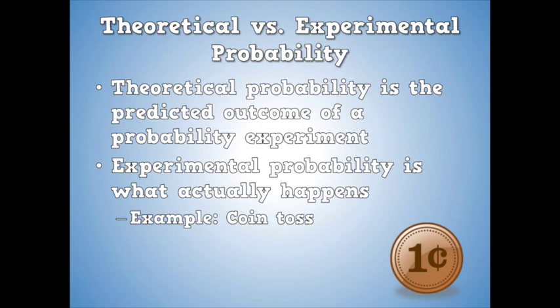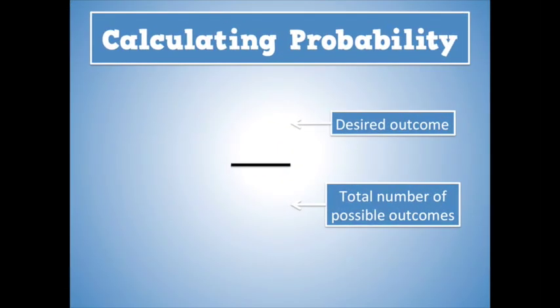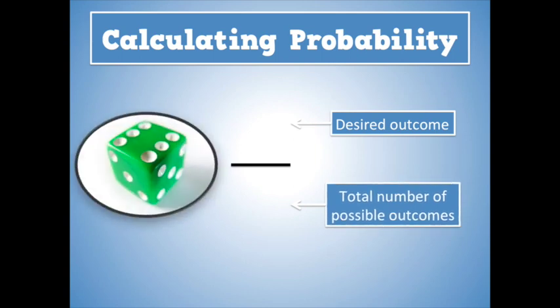So now we're going to the next section, which is how do we actually calculate probability? We think of probability as a fraction. In the numerator on top, we have our desired outcome, what we're looking for. And at the bottom, we have our total number of possible outcomes. So let's imagine we just have a single die, and we're wondering about the probability of rolling a six.